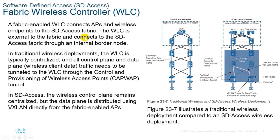The Fabric Wireless Controller or WLC: a fabric-enabled Wireless LAN controller connects access points and wireless endpoints to the SD-Access fabric. The WLC is external to the fabric and connects through an Internal Border Node. In traditional wireless, the WLC is typically centralized and all control plane and data plane wireless client traffic needs to be tunneled to the WLC through CAPWAP. In SD-Access, the wireless control plane remains centralized, but the data plane is distributed using VXLAN directly from fabric-enabled access points.